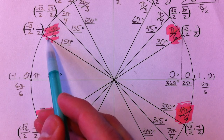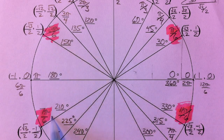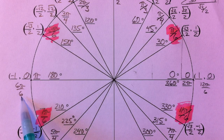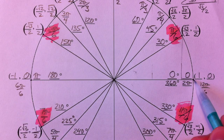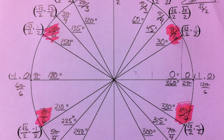Notice: five pi over six is one less than six pi over six, seven pi over six is one more than six pi over six, and eleven pi over six is one less than twelve pi over six.